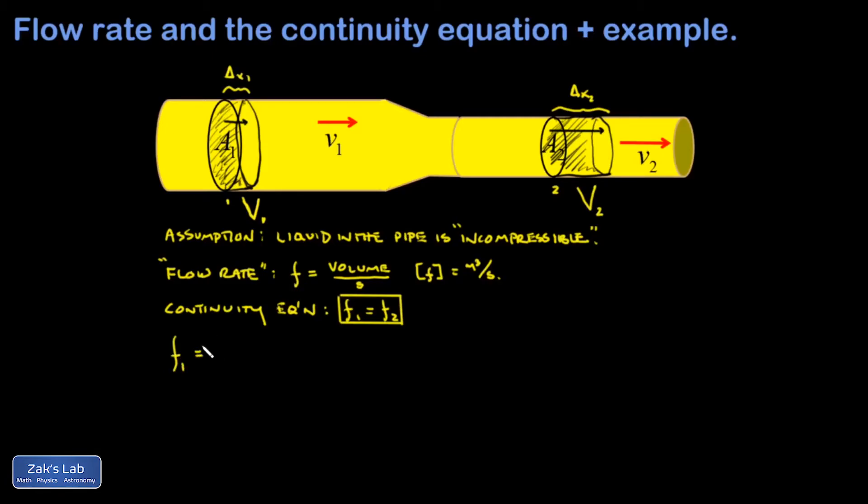So the flow rate at 0.1 must be the volume passing that point. That's a capital V over the time it took. But I can express that volume in terms of the cross-sectional area A1 multiplied by the length of that cylinder, delta X1. And here's where I find my fluid speed. Delta X1 over delta T is just little v1. So the flow rate at that point is just the cross-sectional area multiplied by the speed at that point.